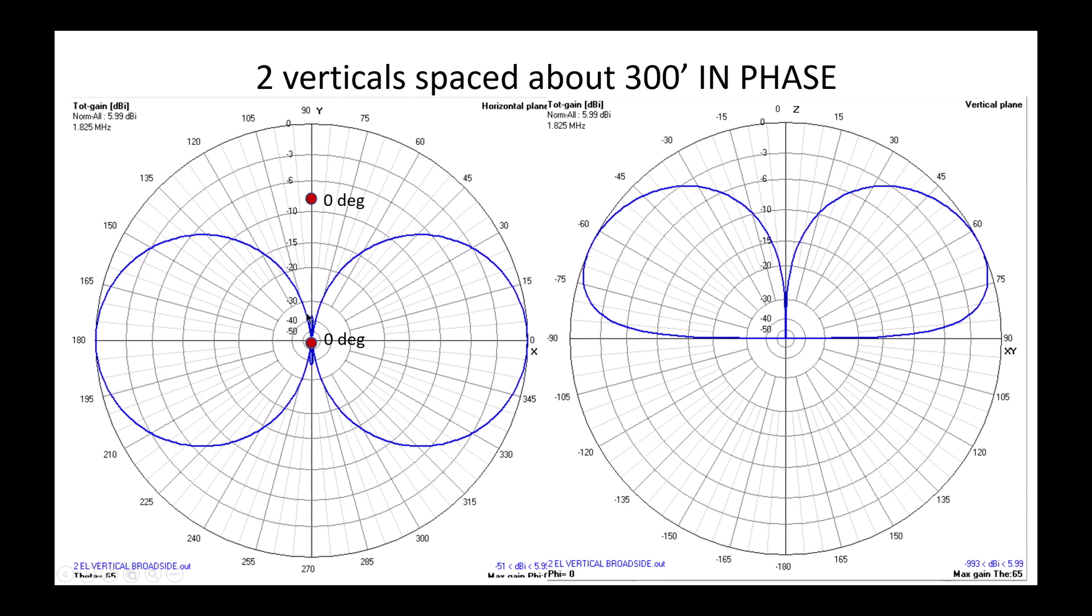If we take those same two verticals but now we're going to space them about 300 feet apart, again on 160 meters, close to a half wavelength. If we phase the two verticals now in phase, that is to say there's no phase delay between the two, or in other words we have an equal length feed line going to both antennas, we end up with this figure eight pattern, a bi-directional pattern both in the azimuth plot and in the zenith plot.